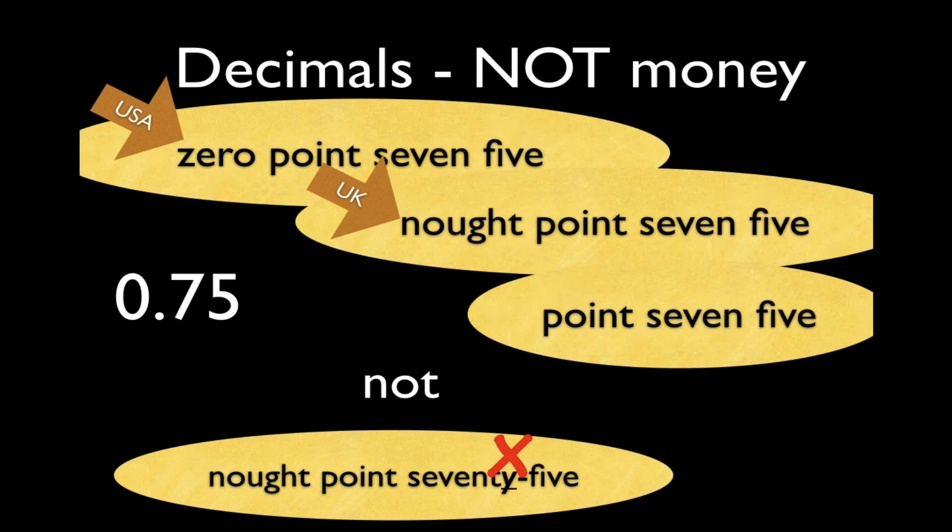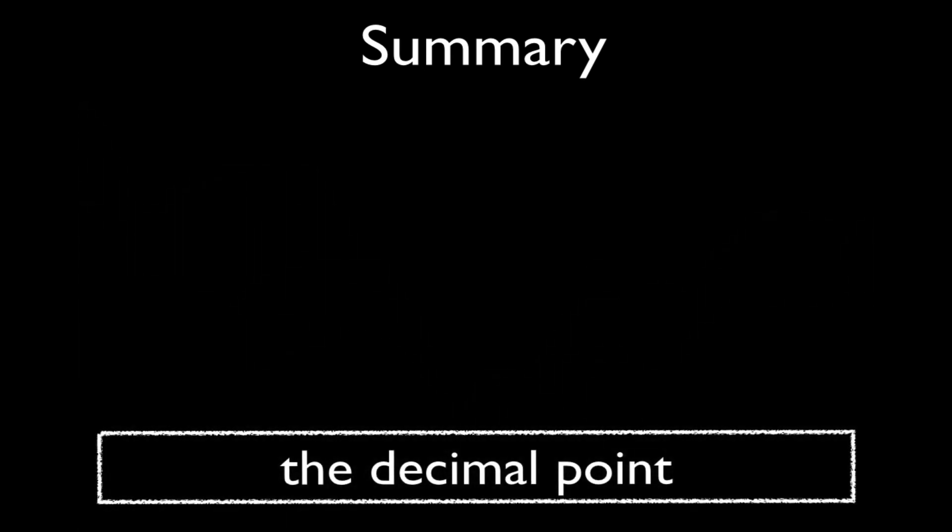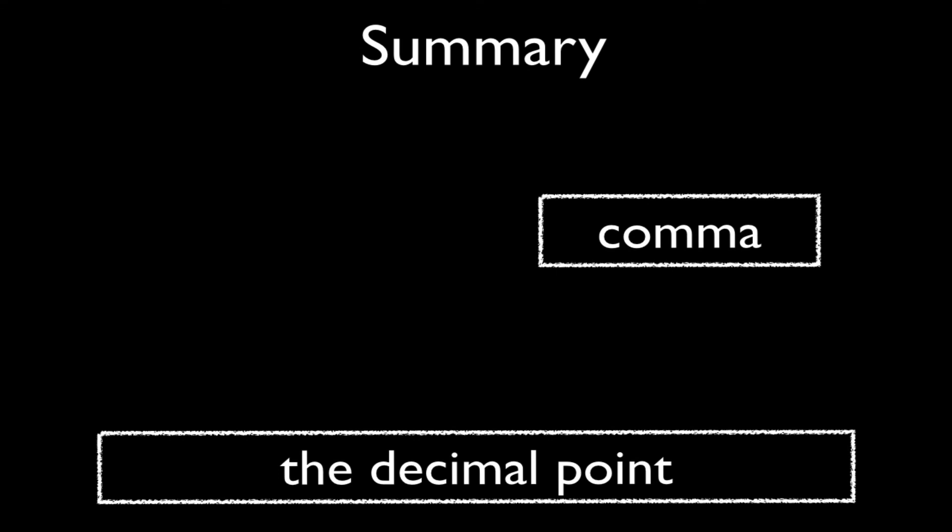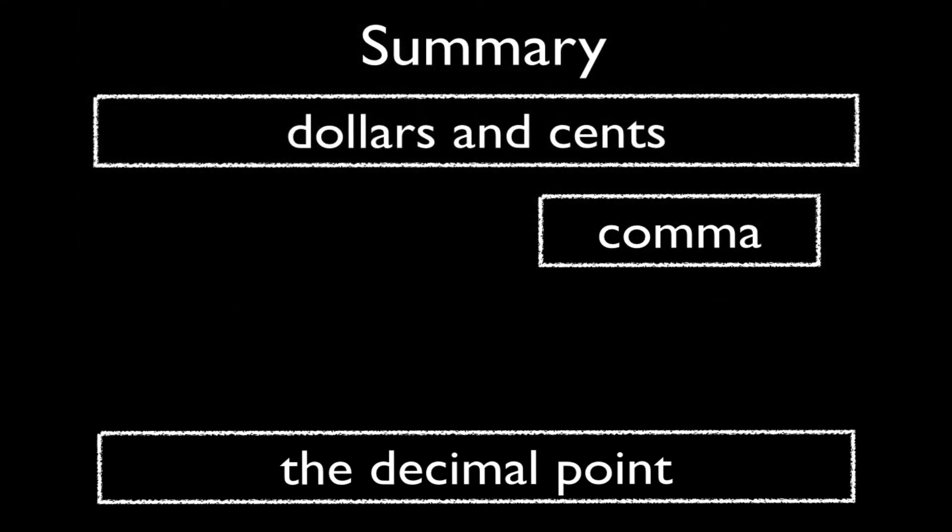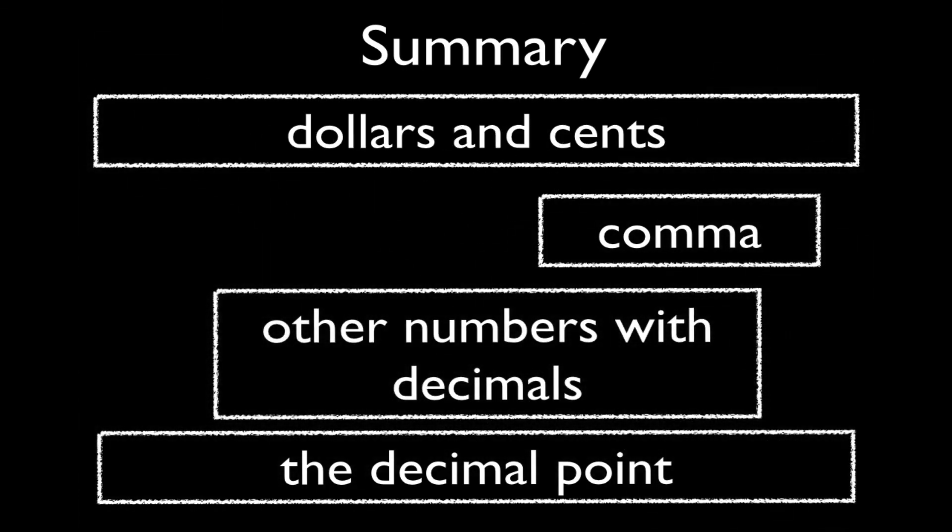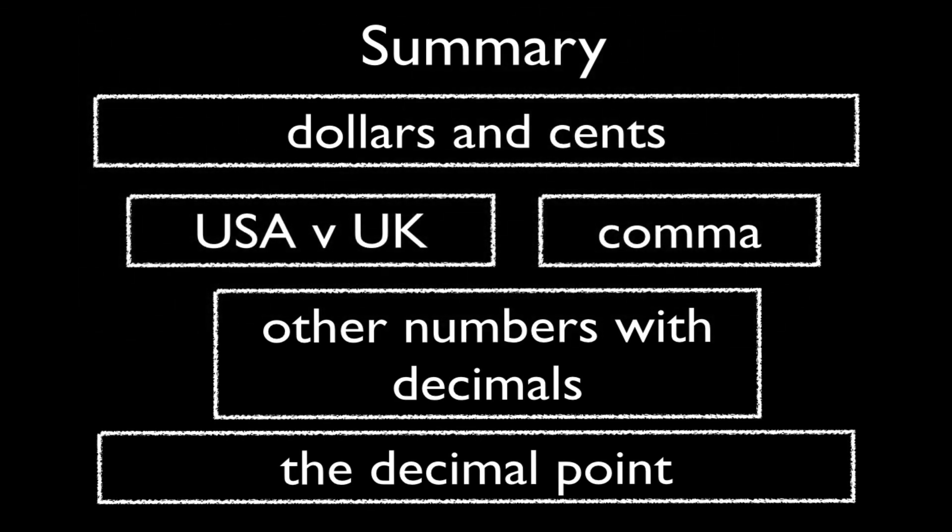So in summary, we've looked at the decimal point, the comma for thousands and millions, writing and talking about dollars and cents. We've looked at other numbers with decimals where we say each number individually, and we've looked at some differences between UK and American English.